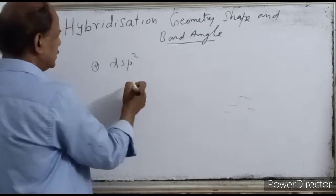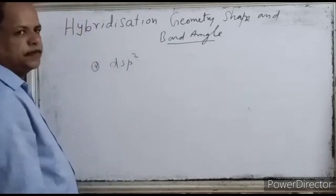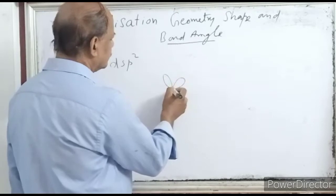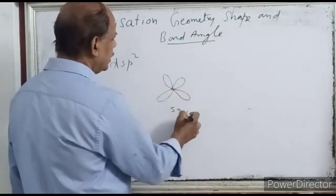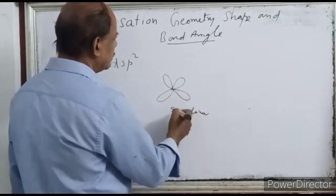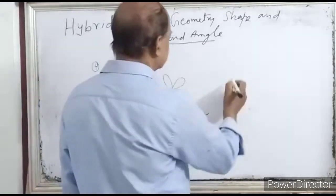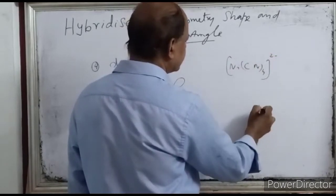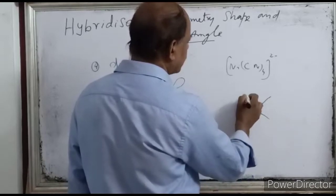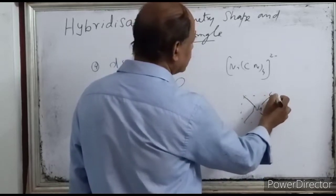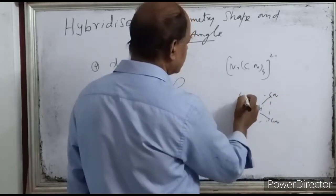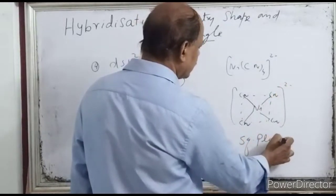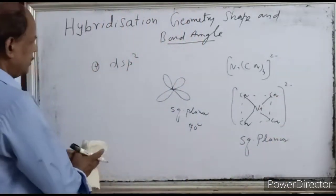The next is DSP² hybridization. In DSP² hybridization, the shape will be square planar. The bond angle is 90°. An example is [Ni(CN)₄]²⁻, which has a square planar shape.